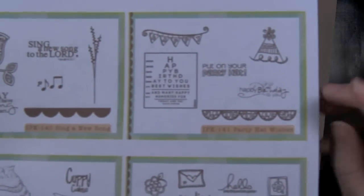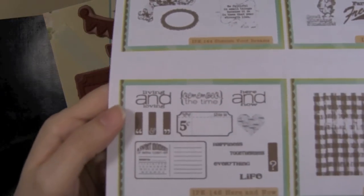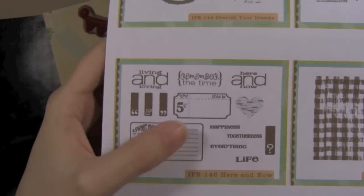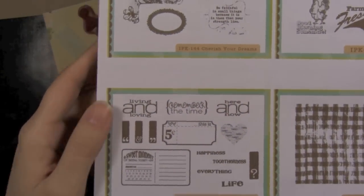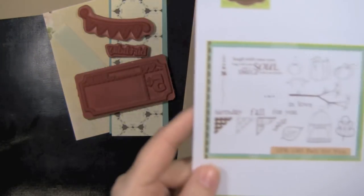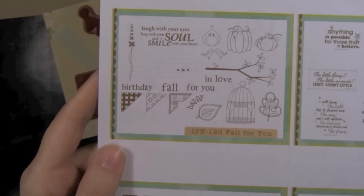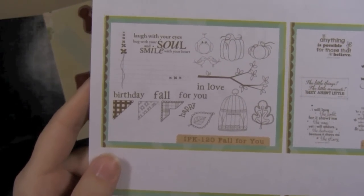The first one is the Party Hat Wishes. I'm going to be using this little banner stamp down here. And then also the Here and Now set. I love this ticket. It can be used for so many things. So we're using that today. And then I'm making a birthday card, so I'm going to grab the birthday stamp from Fall For You, which is from the 2010 Spring Collection.